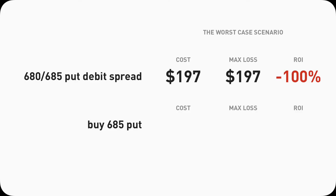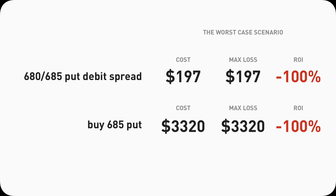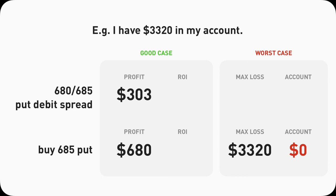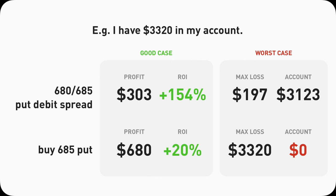What's the catch? Spending $197 on a $680-$685 put debit spread: if Tesla ends at $678, you lose all $197 — a 100% loss. Spending $3320 on a $685 put: if Tesla ends at $680, you lose all $3320 — also a 100% loss. But look at it this way: if your account only has $3320, the worst scenario is your account is wiped to zero. But if you only spend $197 out of that $3320 on the put debit spread, the downside is you only lose $197 and still have $3123 in your account. Your account will not be wiped to zero.